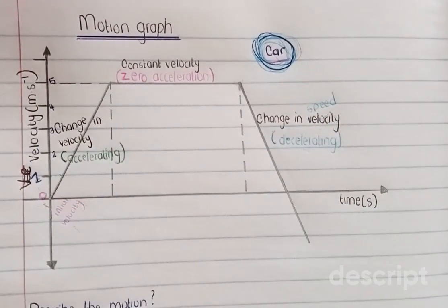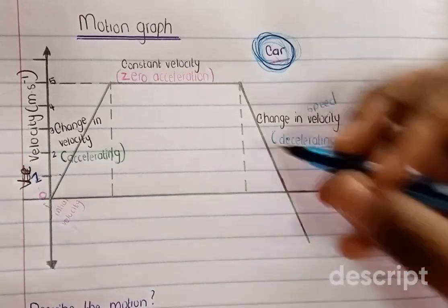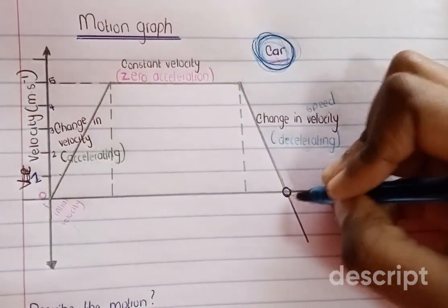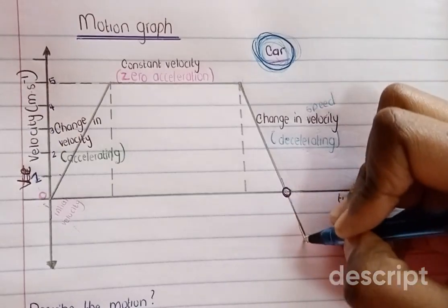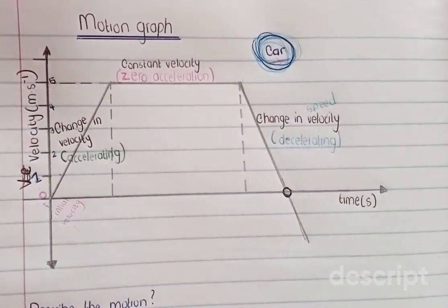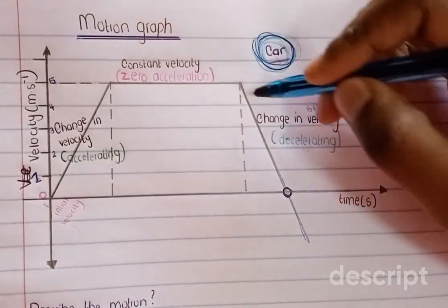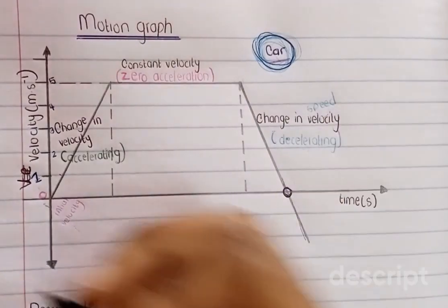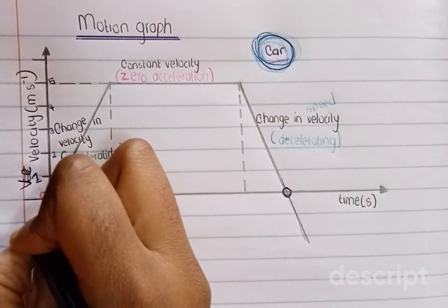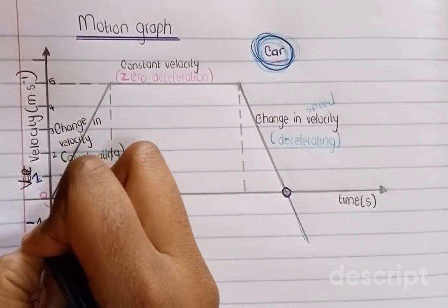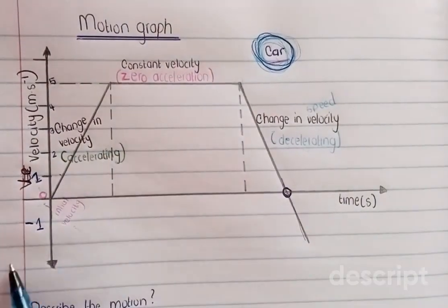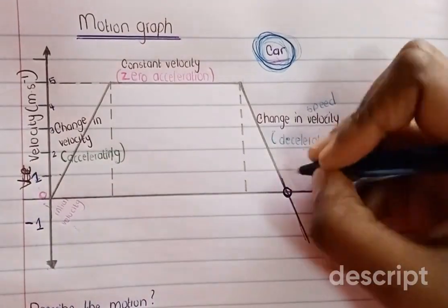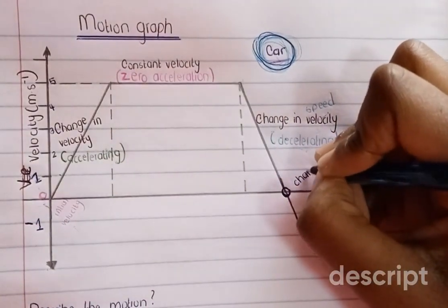One of the things that used to confuse me is what happens at this point — when they ask you to describe the motion when the graph cuts through the x-axis and goes to the negative, meaning negative velocity. Guys, negative velocity simply means that when it gets to this point, the values are negative. This means that the car changed its direction.